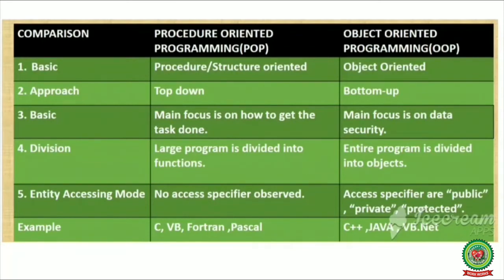Number 2: Procedure Oriented Programming follows a top-down approach. In C language, when a program is created, the main method comes first because there is no class. Firstly the main method is there and then the number of functions. As execution starts from the main method, it follows the top-down approach — main function executes and then the other methods.